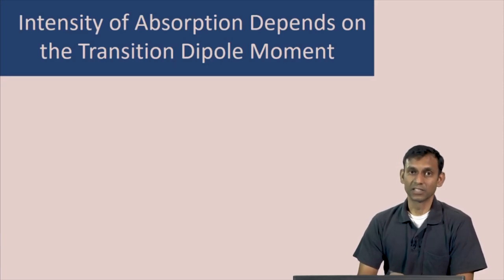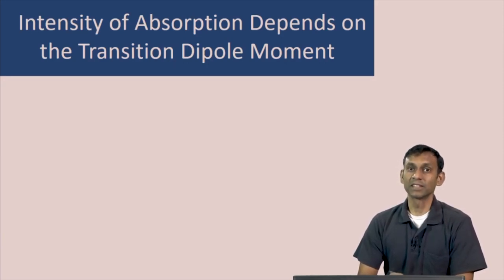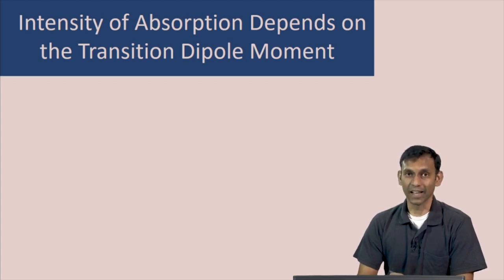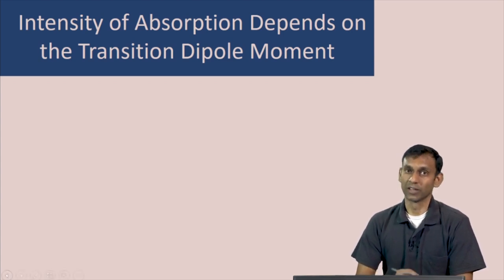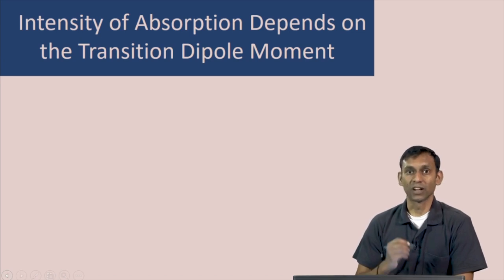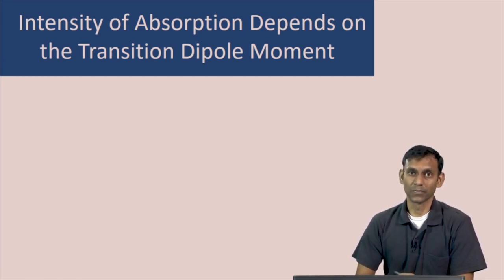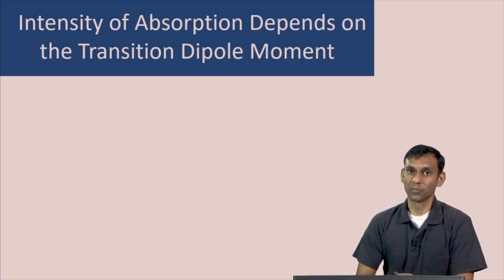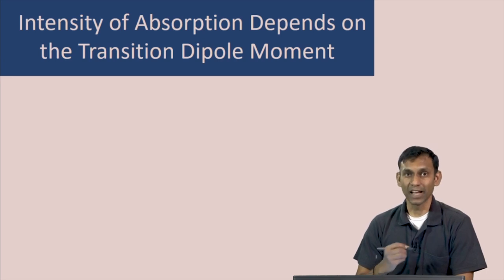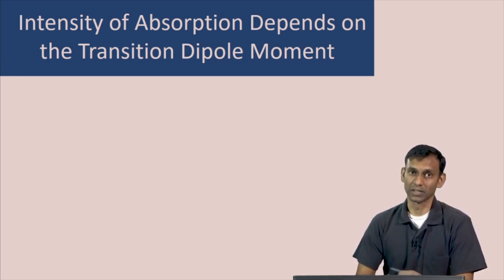One of the most important ideas in spectroscopy is that the intensity of absorption or emission of light by an atom or a molecule depends on the transition dipole moment of the atom or molecule. Let us look at what this transition dipole moment is first, and then in this lecture we will derive that the intensity depends on this quantity.